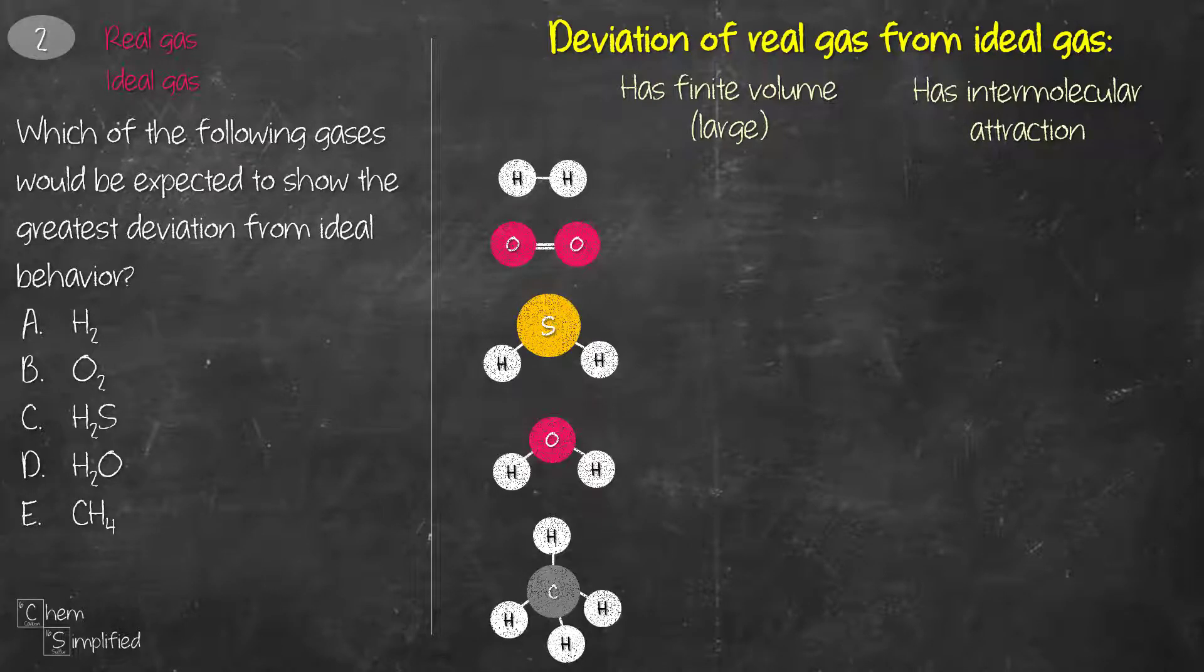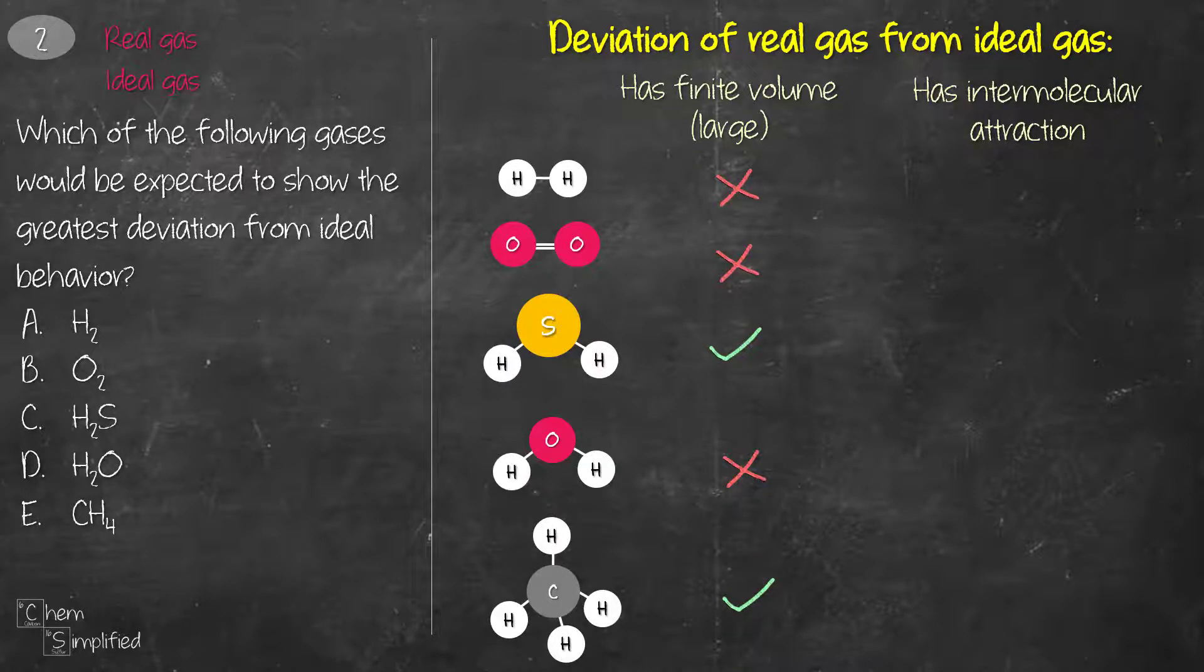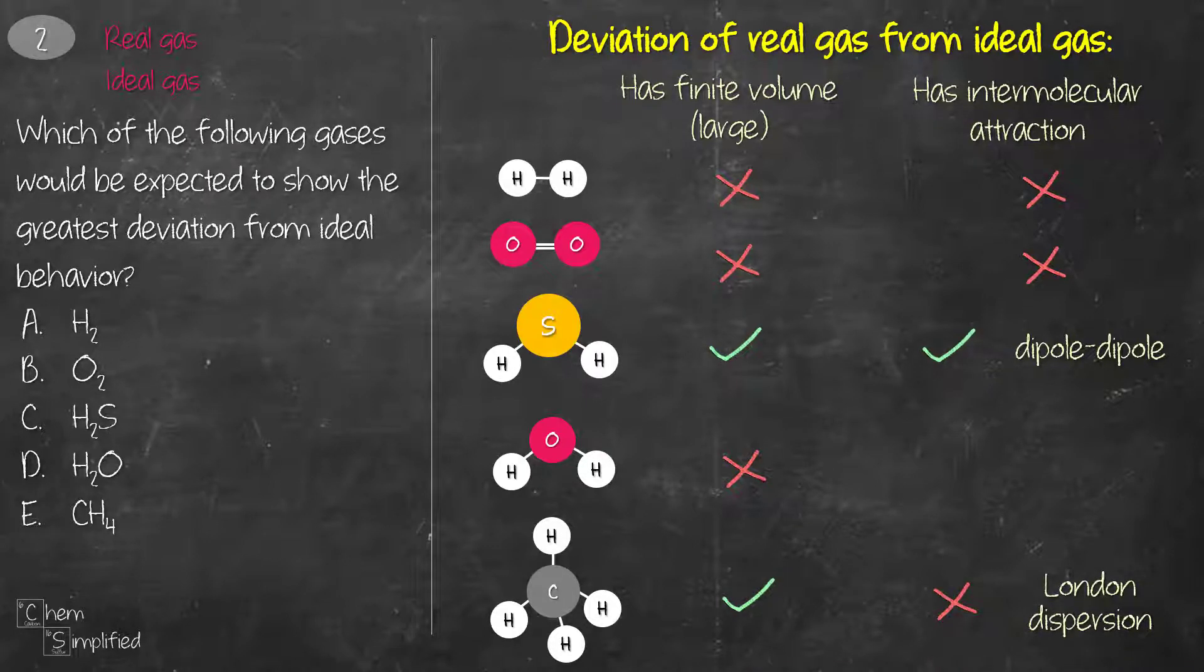That means gases that are large and have strong intermolecular forces will show deviation from ideal behavior. Among these five molecules, H2S and CH4 are large. H2S has dipole-dipole interaction, which is strong, while CH4 has London dispersion, which is weak. Even though H2O has hydrogen bonding, which is even stronger than the dipole-dipole in H2S, its overall size is smaller when compared to H2S. For option C, H2S is the best answer.